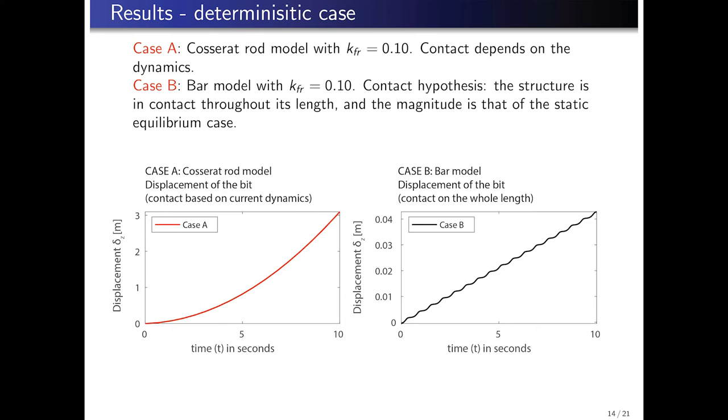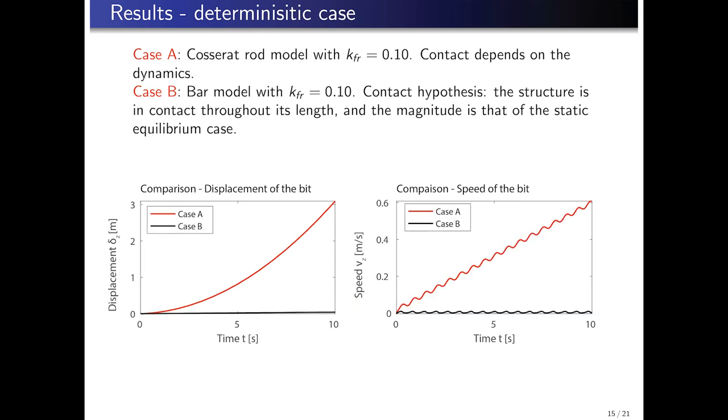The displacements for case A, which is the Cosserat rod model, are shown to the left, and for case B, which is the bar model, to the right. It is observed that the results differ qualitatively, and also in magnitude. For the CR model, the displacements are in the order of 100 times higher.